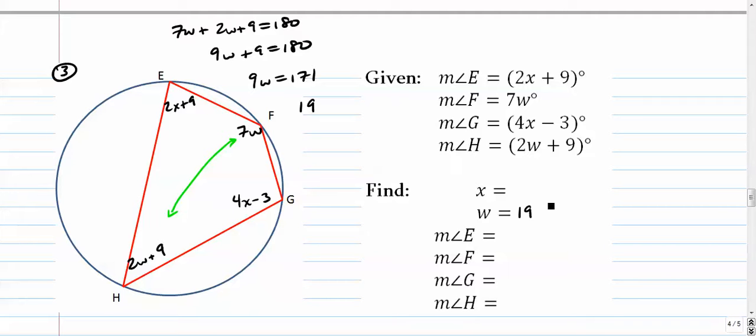If w is 19, we could find the actual measure of angle F and angle H very quickly. Because they both have w's in their expressions. So angle F is what is 7 times 19. 7 times w. So 7 times 19. Let's see, that's 70 plus 63. It's 133.